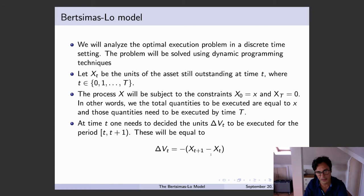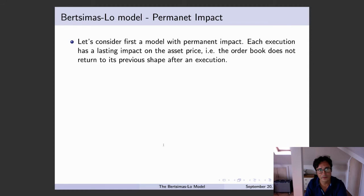And ΔV_T, as you can see, is simply the change between what we had to execute at the previous time, minus the amount left to execute at the following time with the minus sign in front, because this is this decreasing function, and ΔV_T is going to be a positive quantity in this sense.